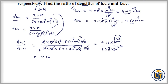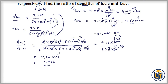For the powers of 10: in division, exponents are subtracted. We have 10⁻²³ divided by 10⁻²², which gives 10⁻²³⁺²² equals 10⁻¹. So the ratio D_BCC over D_FCC equals 7.12 × 10⁻¹, which can also be written as 0.712.